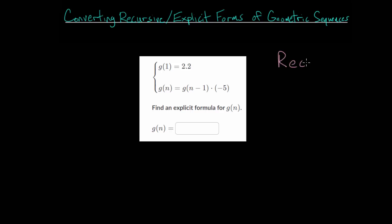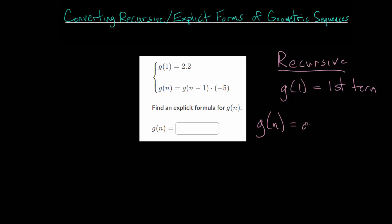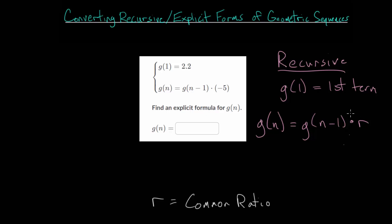Let's talk about recursive first, since that's what we're actually given in our problem. For a recursive formula, we're always given the first term — g of one. Then we're given the pattern: to find the nth term in the sequence, we look at the term before that, denoted as g of n minus one, and multiply by r, where r is the common ratio — the number we multiply by to go from one term to the next. This is our recursive formula in its most general form.